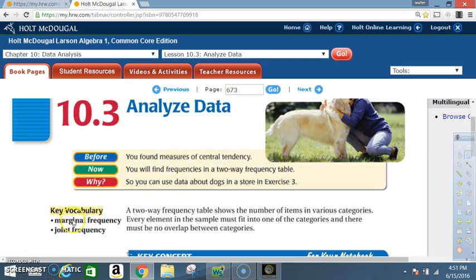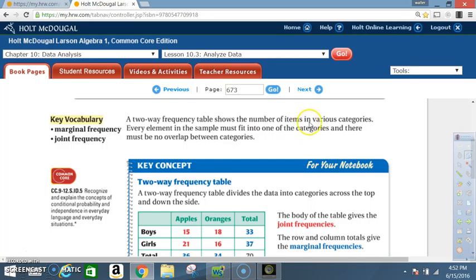Key vocabulary: marginal frequency, joint frequency. A two-way frequency table shows the number of items in various categories. Every element in the sample must fit into one of the categories and there must be no overlap between categories.